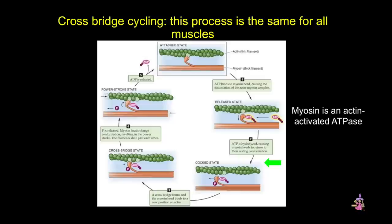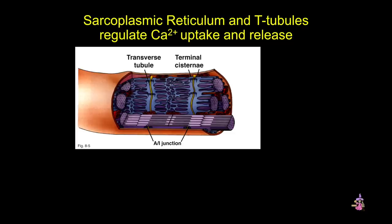As the cleft in myosin closes around ATP, ATP hydrolyzes, causing another conformational change. You can see in this diagram that the myosin head changes its angle, allowing it to relocate to another site on the actin filament that is more towards the plus end. Now the cross-bridge forms with the myosin head in a new position on the actin, the phosphate is released, and the cycle continues. This process is called cross-bridge cycling, and it's the same for all muscles.